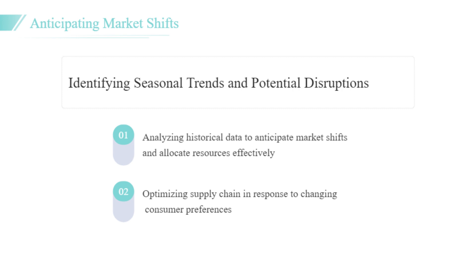Moreover, predictive analytics empowers companies to anticipate market shifts and adjust their supply chain strategies accordingly. By analyzing historical data, businesses can identify seasonal trends and potential disruptions, allowing them to allocate resources more efficiently. A well-known example is a beverage company that leveraged predictive analytics to optimize its supply chain in response to changing consumer preferences. This proactive strategy not only reduced waste but also enhanced the company's ability to meet customer expectations promptly.